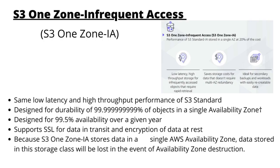The next storage class is S3 One Zone Infrequent Access. It is also used for data which is accessed less frequently. The key difference is that the data is not replicated across three AZs — it is stored in only one AZ. So if the AZ in which your data is stored is lost, you can lose your data as well. The use case is ideal for secondary backups and workloads with easily recreatable data, and it provides availability of 99.5%.